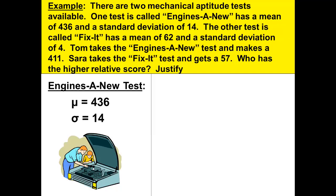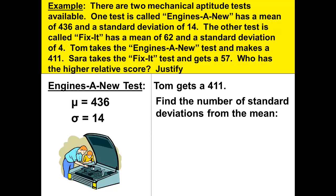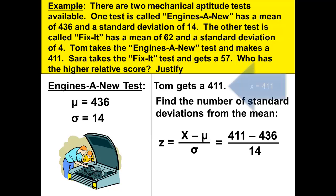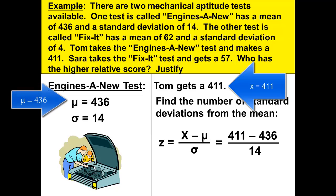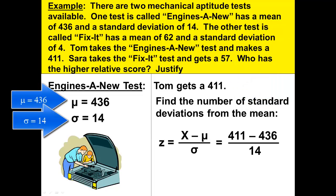Let's go back and look at Tom's Engine-A-New test. We find the number of standard deviations from the mean by using the formula: z equals x minus the mean divided by the standard deviation — x minus mu over sigma. x is 411, minus 436 which is the mean, divided by 14 which is the standard deviation.